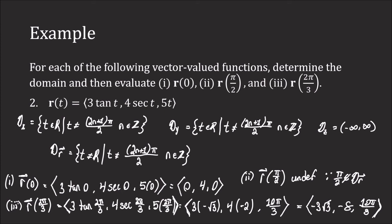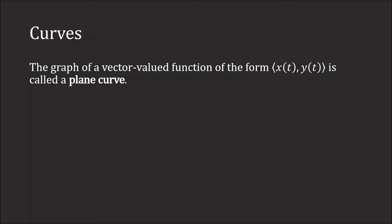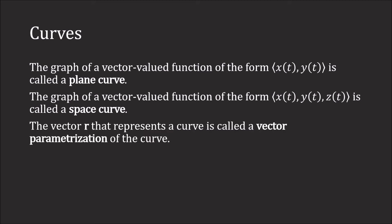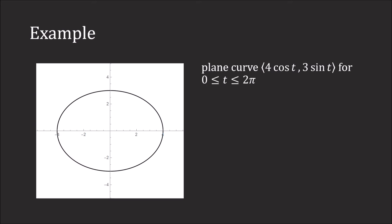Since these vectors are functions, we can graph them. The graph of a vector function is called a curve. If it is two-dimensional, it is a plane curve; if it is a three-dimensional vector function, it is called a space curve. The vector r that represents the curve is called a vector parameterization of the curve. As an example, this is the plane curve <4cos(t), 3sin(t)>, where t ranges from 0 to 2π.